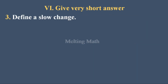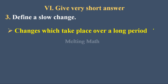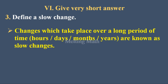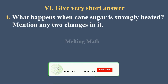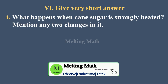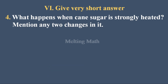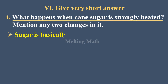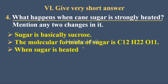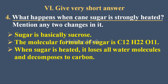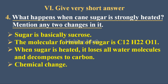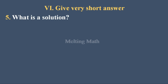Question three — define a slow change. Changes which take place over a long period of time — hours, days, months, years — are known as slow changes. Question four — what happens when cane sugar is strongly heated? When cane sugar is heated it loses all water molecules and decomposes to carbon. Mention any two changes in it: it is a chemical change and an irreversible change.